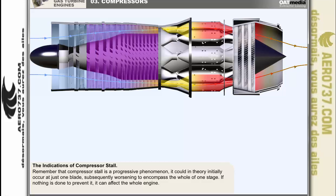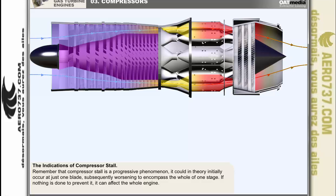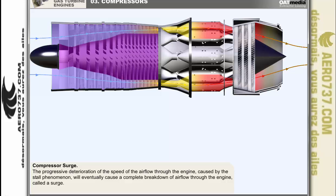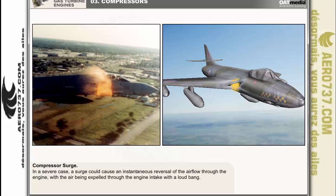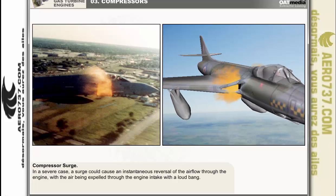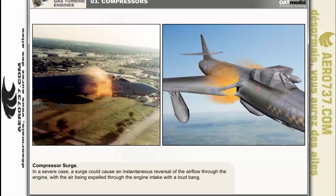Compressor stall is a progressive phenomenon. It could initially occur at just one blade, subsequently worsening to encompass the whole of one stage, and then if nothing is done to prevent it, it can affect the whole engine. The progressive deterioration of airflow speed through the engine caused by the stall phenomenon will eventually cause a complete breakdown of airflow — surge. In severe cases, surge could cause an instantaneous reversal of the airflow through the engine, with air being expelled through the engine intake with a loud bang.